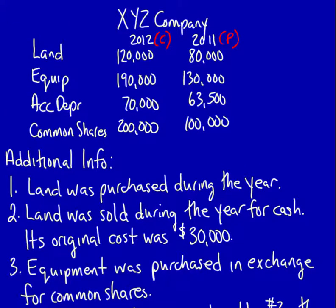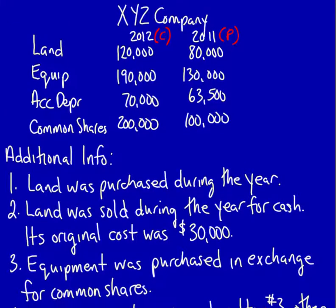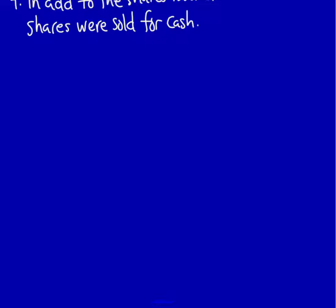The very first thing I'm going to do is create the blank T-accounts. I'm going to start with the T-accounts for land. Land doesn't have any accumulated depreciation because land does not depreciate. It's going to have future economic benefit forever. I'm going to put the opening balance first, which is $80,000 from the statement of financial position. Then I'm going to put $120,000 directly from the balance sheet.